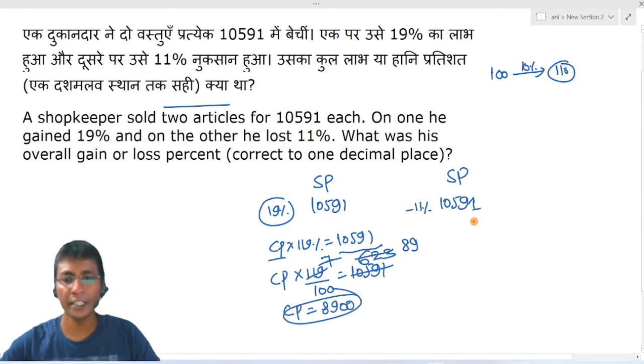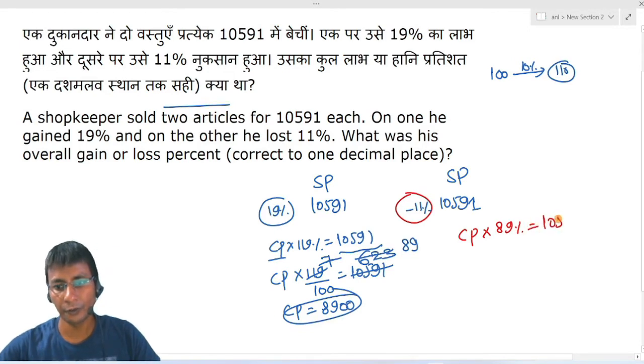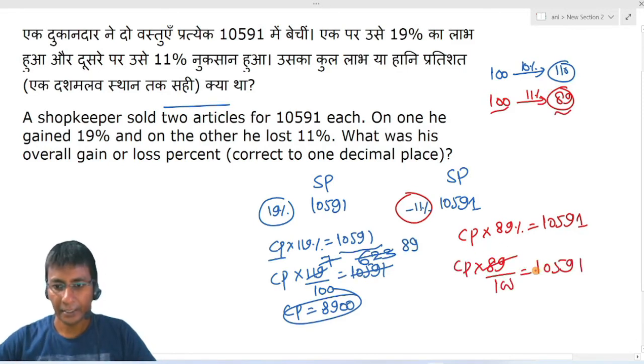In the second case, there's 11% loss. What does it mean? CP times 89% equals 10591. If a 100 rupee article has 11% loss, you'll sell it for 89. So this divides by 89. Now here is the magic - I've written it by dividing.